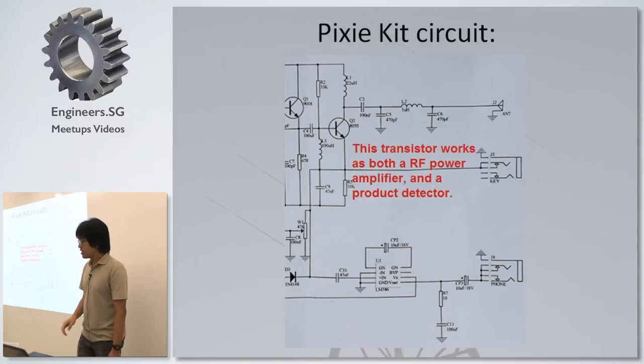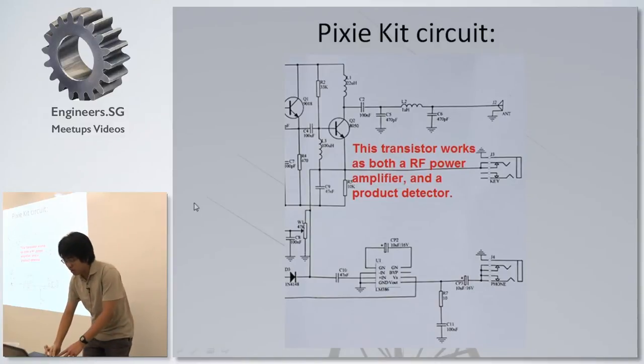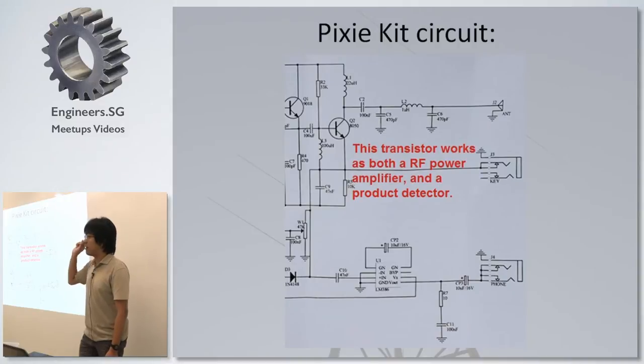In a Pixie kit, as the transistor over here, Q2, when you key down the key over here, it acts like a RF power amplifier, amplifies your signal from oscillator. But once you unkey, it still works, it's still on. You'll notice that there is still a very small signal at the antenna, because I want to mix the input frequency, the received signal, and my oscillator input, and I get back my audio frequency, which will hear as dits and dahs at the speaker end.